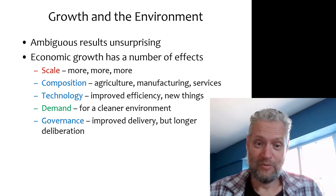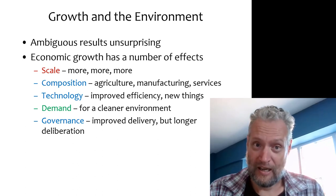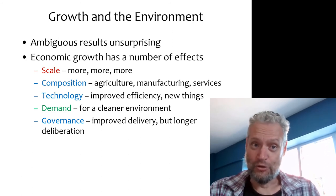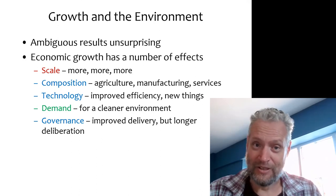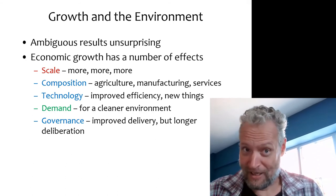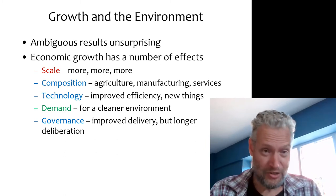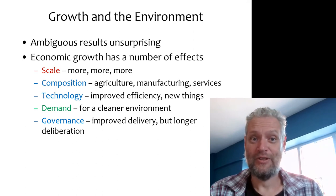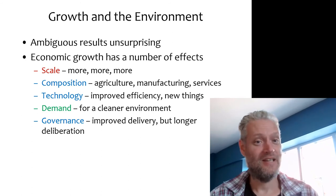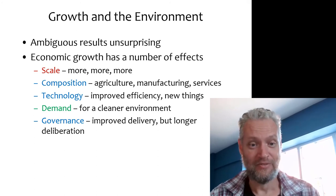There are two other ambiguous effects as well. One is technology. The good thing about technology is that efficiency tends to improve — resource efficiency, fuel efficiency — which means you can do more with less, putting less pressure on the environment. On the other hand, we invent new things, and those new things may be bad for the environment. All the heavy metals in computers and mobile phones used not to be there because we didn't have these things. So new technology can also create new environmental problems that we used not to have.